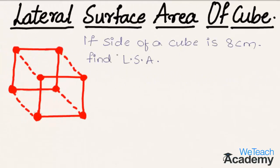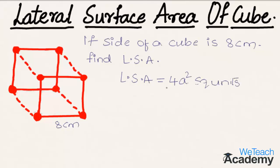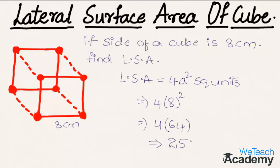Let's discuss an example using this formula. If the side of a cube is 8 centimeters, find the lateral surface area. We apply the formula: lateral surface area = 4s² = 4 × 8² = 4 × 64 = 256 square centimeters.